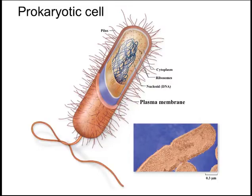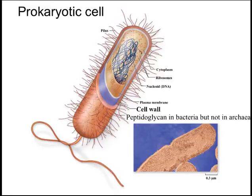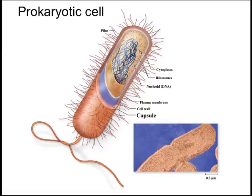There is the plasma membrane enclosing all the components of the cell, and then there is a cell wall covering the plasma membrane. The cell wall is made of peptidoglycan in bacteria. Archaea cells also have cell walls, but they're not made of peptidoglycan. Some bacteria cells may have an additional layer of protection called a capsule, and some may use a flagellum for movement — which is structurally different from a flagellum in a eukaryotic cell.